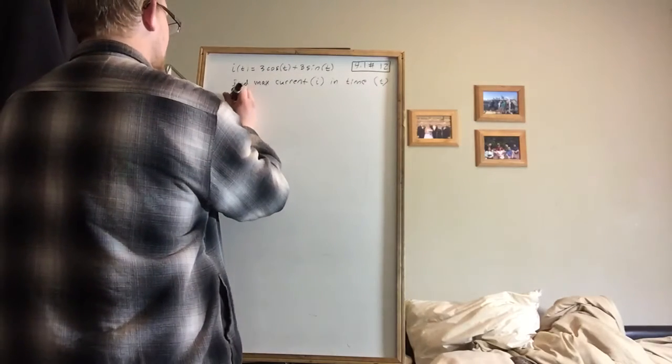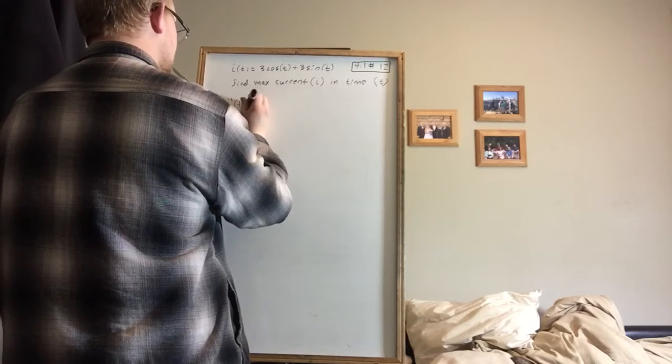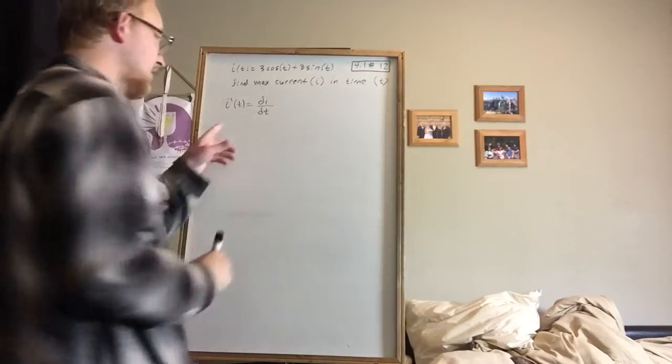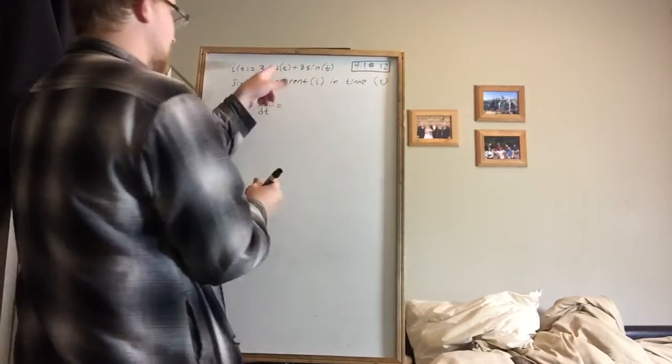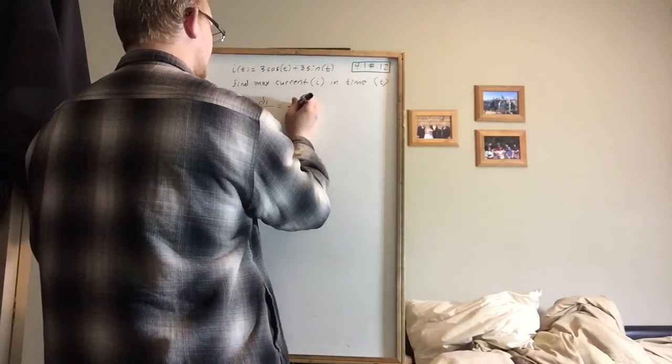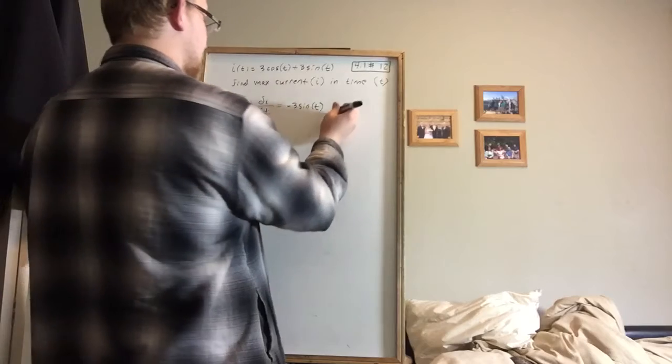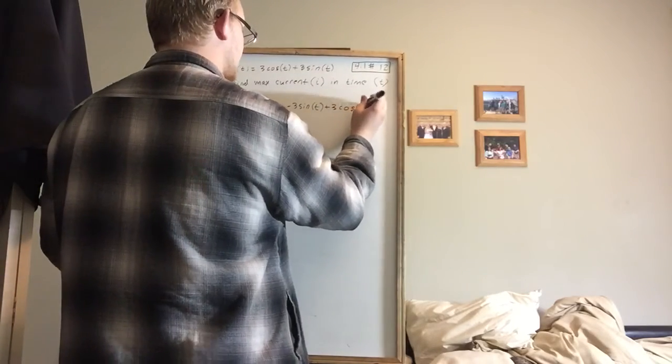So as with everything else we've done, we're going to take the derivative of i with respect to t. You could write this as di dt, or i prime of t. And that's going to be 3 cosine t is going to be negative 3 sine t. And 3 sine t is going to be 3 cosine t when we take the derivative with respect to t.